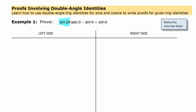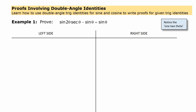We've got that sine of 2 theta times secant of theta minus sine theta is just equal to sine theta on the other side. As always we try to think about which side we're going to start with, and given that that side looks a lot more complex, we're going to start with that side. If you notice you have trig functions that involve double an angle and some that do not, a good first step is to make a replacement for the ones that involve double an angle. So this sine of 2 theta we can write as 2 sine theta cos theta.